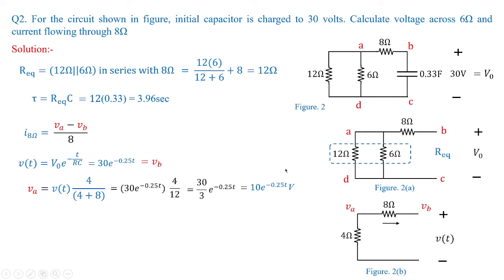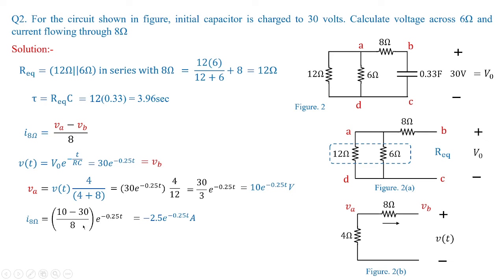The voltage across 6 ohms equals 10 e to the power of minus 0.25t — this is the first answer given in the previous video. For the current through 8 ohms, using VA minus VB divided by 8: VA is 10 and VB is 30, so 10 minus 30 divided by 8, with the common exponential e to the power of minus 0.25t taken outside, gives minus 2.5 e to the power of minus 0.25t amperes.